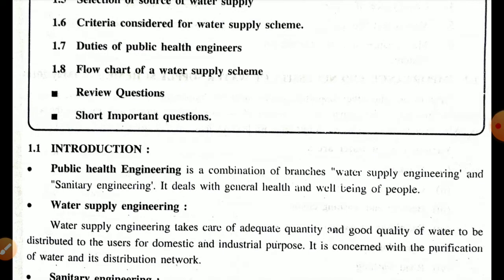First of all we should know what is public health engineering. Public health engineering is a combined form of water supply engineering and sanitary engineering. It deals with the general health and well-being of the people. It is a combination of two branches: water supply engineering and sanitary engineering.